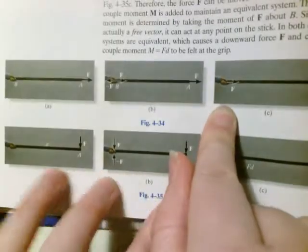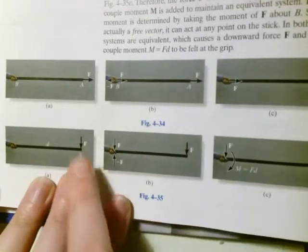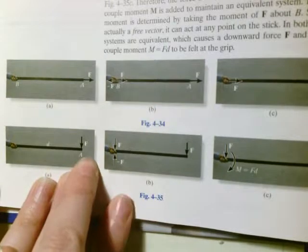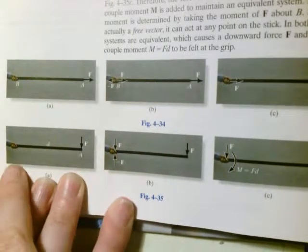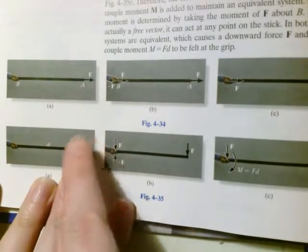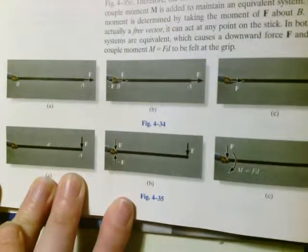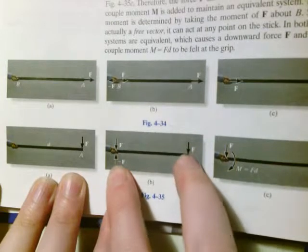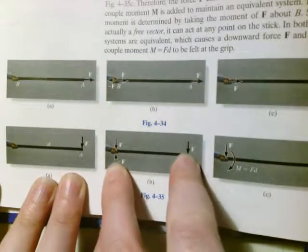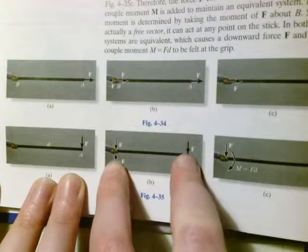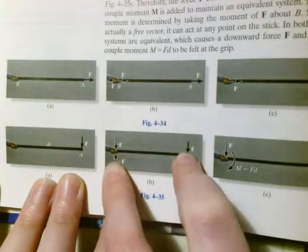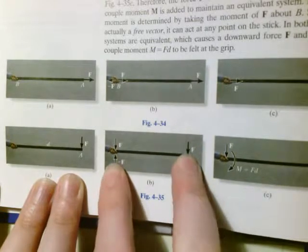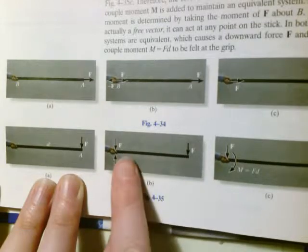That's the basic gist of what we're doing. In this example we've got a force at the hand. We add a negative F and a positive F. Now you have a couple, the negative F and F. Those forces cancel, but you have to take into account the moment that they produce. The moment they produce is F multiplied by the distance between them, D.